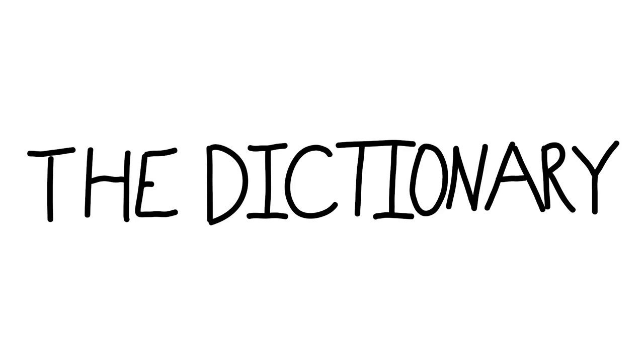Now we have the second form of analog. It is a chiefly British variation of the word analog without the U-E. Now we have analogy. This is a noun from the 15th century. One: inference that if two or more things agree with one another in some respects, they will probably agree in others.